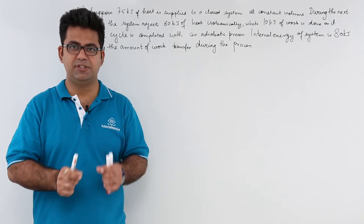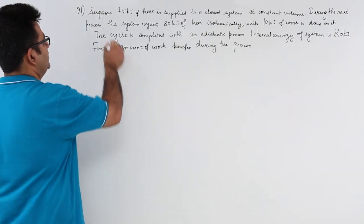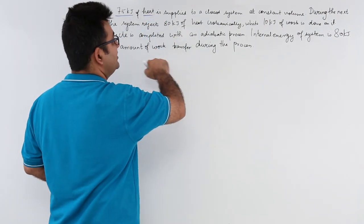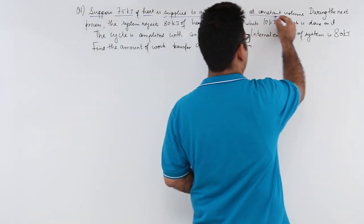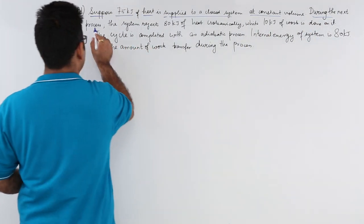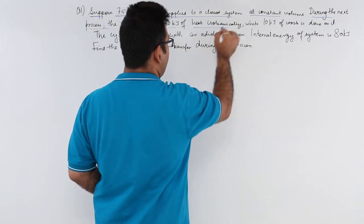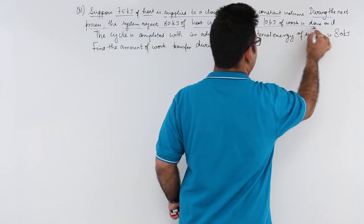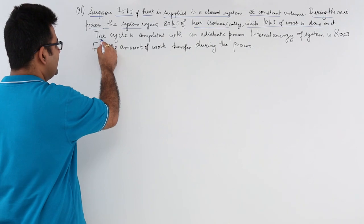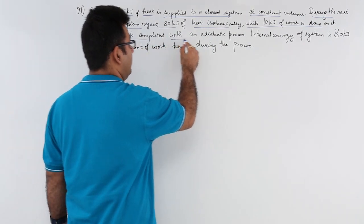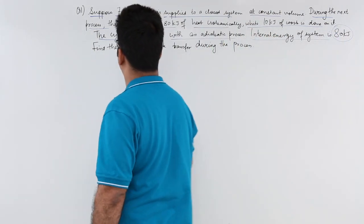Now let's look at the first question on the first law of thermodynamics. Suppose 75 kilojoules of heat is supplied to a closed system at constant volume. During the next process, the system rejects 80 kilojoules of heat isobarically while 10 kilojoules of work is done on it. The cycle is completed with an adiabatic process. Internal energy of the system is 80 kilojoules.